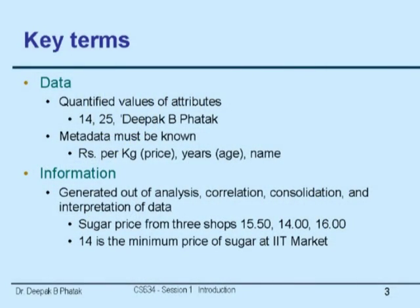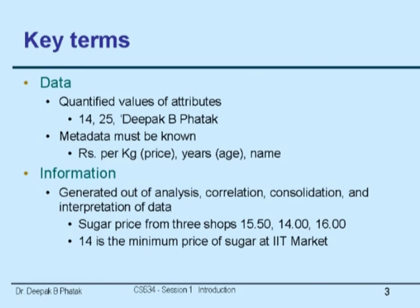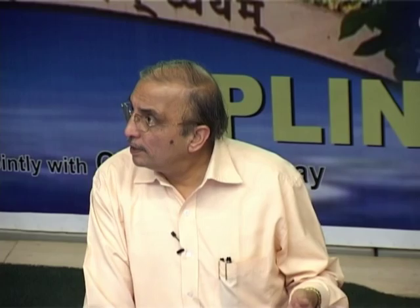Information is a term which describes the next level of data. It is typically generated out of analyzing, consolidating, and correlating a large amount of data together for some meaningful purpose. For example, if we evaluate sugar prices in three different shops, we have three different pieces of data. If we compare them and say the minimum is 14, then that number becomes consolidated and analyzed information — the best sugar price available from nearby shops is 14 rupees. Information conveys something more meaningful and comes from analysis, correlation, and consolidation of data.